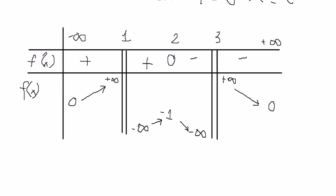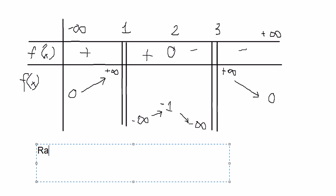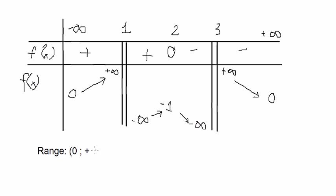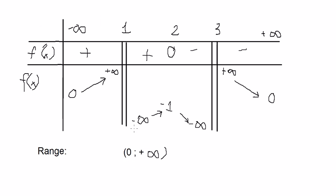Based on the variation table, we can find the range. The range should be from 0 to positive infinity, and the next part should be from negative infinity to negative 1. So the range is from negative infinity to negative 1, union with 0 to positive infinity. That is the final answer. Thank you for watching.